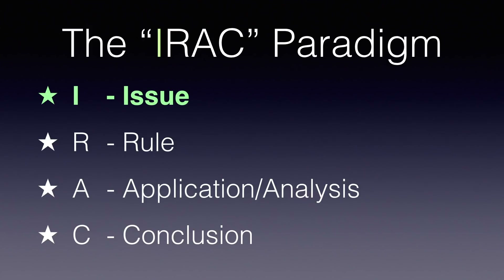The advanced portion of this video is a discussion about what constitutes a single issue and when we are going to deal with issues separately. For example, we know that the law of negligence has four elements: Duty, Breach, Cause, and Damages. So is negligence an issue, or is each of Duty, Breach, Cause, and Damages a separate issue, each meriting its own IRAC? It depends on the facts, and we'll look at some examples to get a better idea about when we're going to smush the issues, and when we're going to deal with them separately.